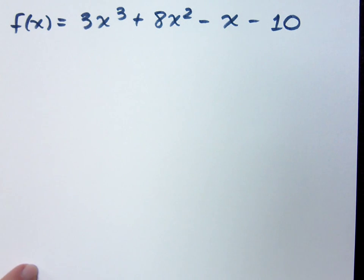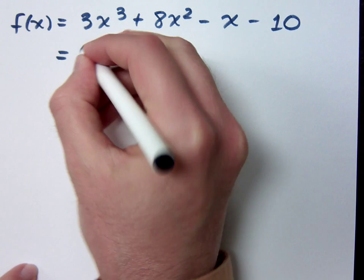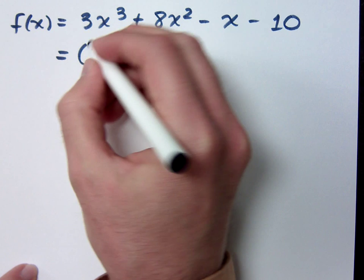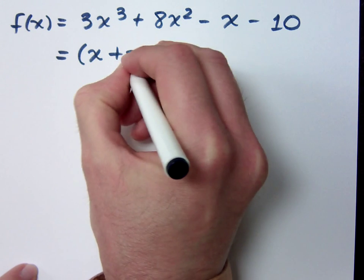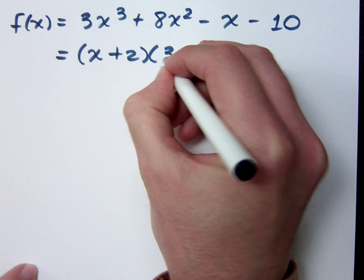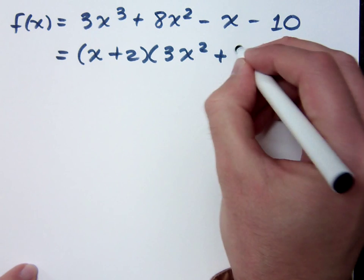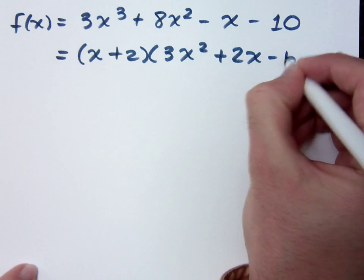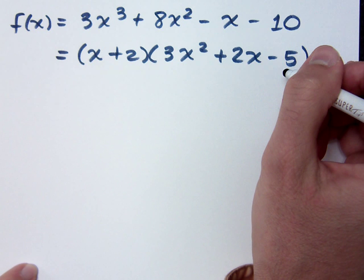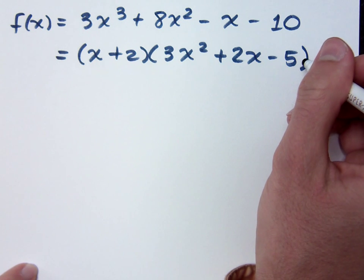So this was the polynomial that we were working with. We found out a zero was negative 2, so that gave us the factor x plus 2. And the other factor was 3x squared plus 2x minus 5 when I do this synthetic division. If you don't know how I got this, look at the previous video.